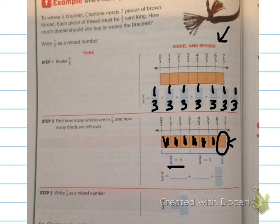Down here they're showing you, if you add up 1 plus 1, the 2 wholes, and then add the 1 third that's left over, 7 thirds is equal to 2, the 2 ones added together, and 1 third.